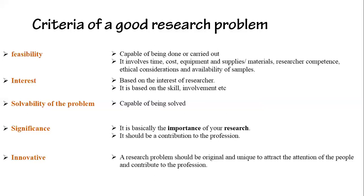You should make sure all equipment and facilities are available and functioning. Next is researcher competence — the skill of the researcher. For example, if you are conducting research in maternity health nursing, you should have competence and skill in that area, otherwise you will face difficulties and errors. Then there are ethical considerations, which vary by region, and availability of samples — if the samples are unavailable or unwilling to participate, it will negatively affect your research.